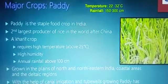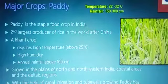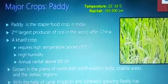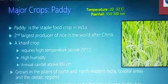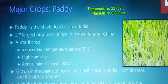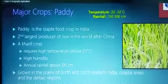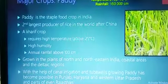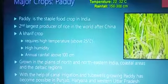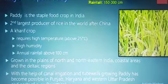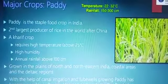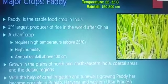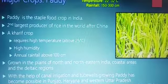Paddy is the staple food crop in India. The temperature needed is 22 to 32 degrees, and rainfall between 150 to 300 centimetres. Rice needs a lot of water. India is the second largest producer of rice in the world after China. This comes under the Kharif crop — it grows in the Kharif season. It requires high temperature, above 25 degrees, and high humidity.